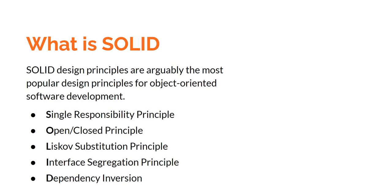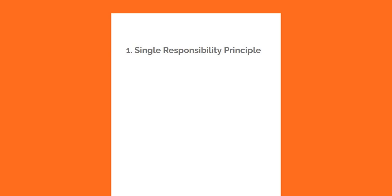Let's start with Single Responsibility Principle. In Single Responsibility Principle, the concept is a class should have only one responsibility — hence only a single purpose to live. You should never overburden a class with multiple responsibilities. I have videos where I spoke about microservices, and I sometimes synonymize microservices with single responsibility services. It's the same principle at a service level. If you boil that down to individual classes, you're saying classes should have only a single responsibility.